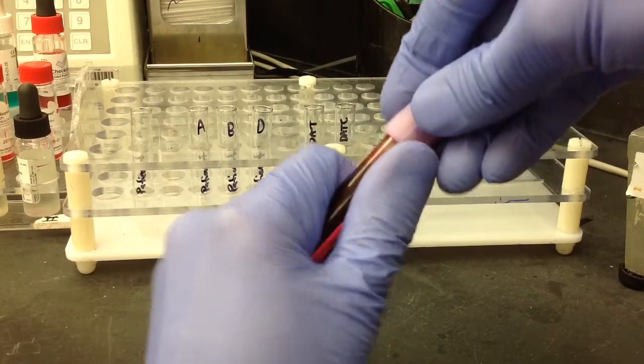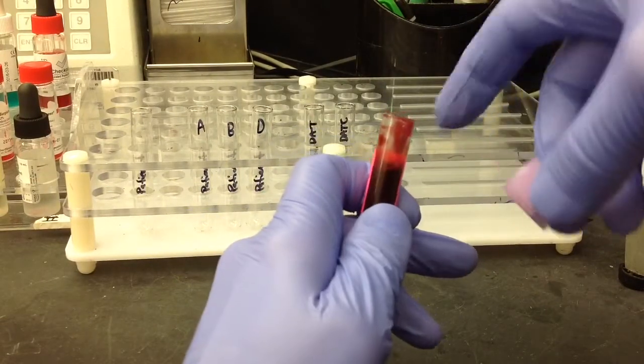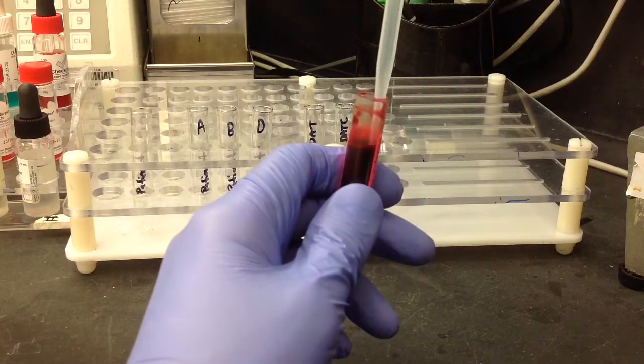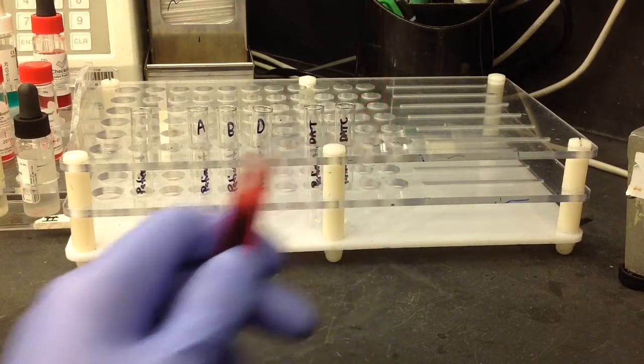When opening a cord blood specimen, they typically are clotted, and if that's the case, just be careful the clot has not stuck to the lid, as you may make a mess if you pull off the lid too fast.